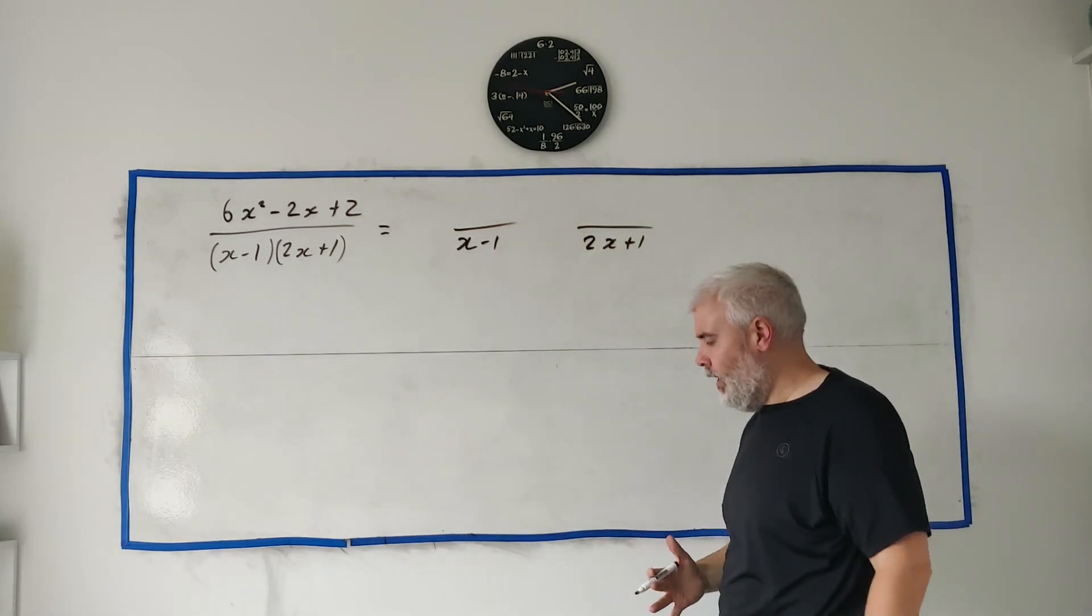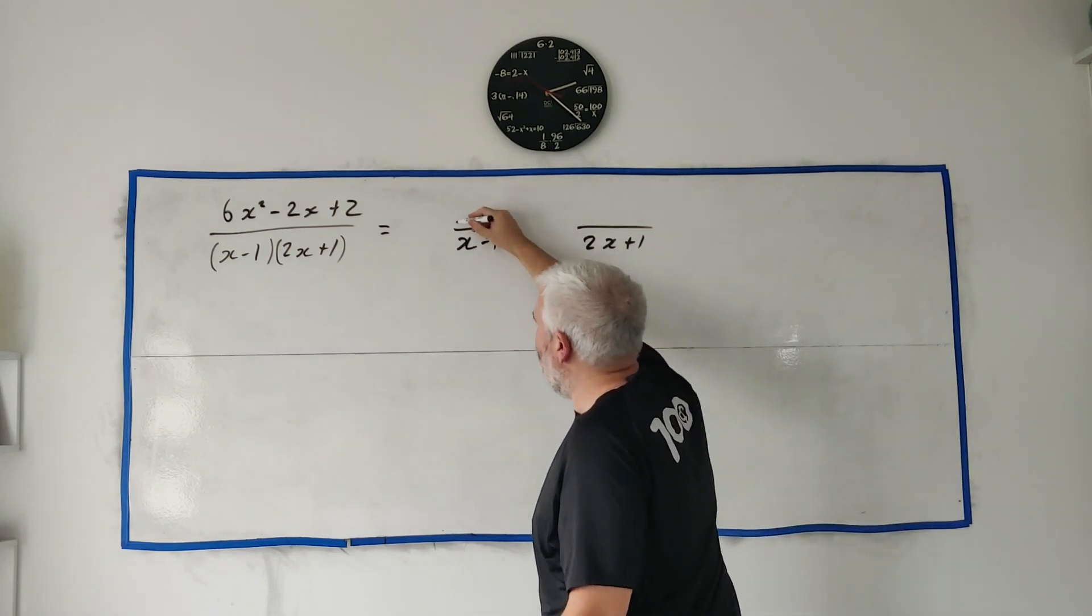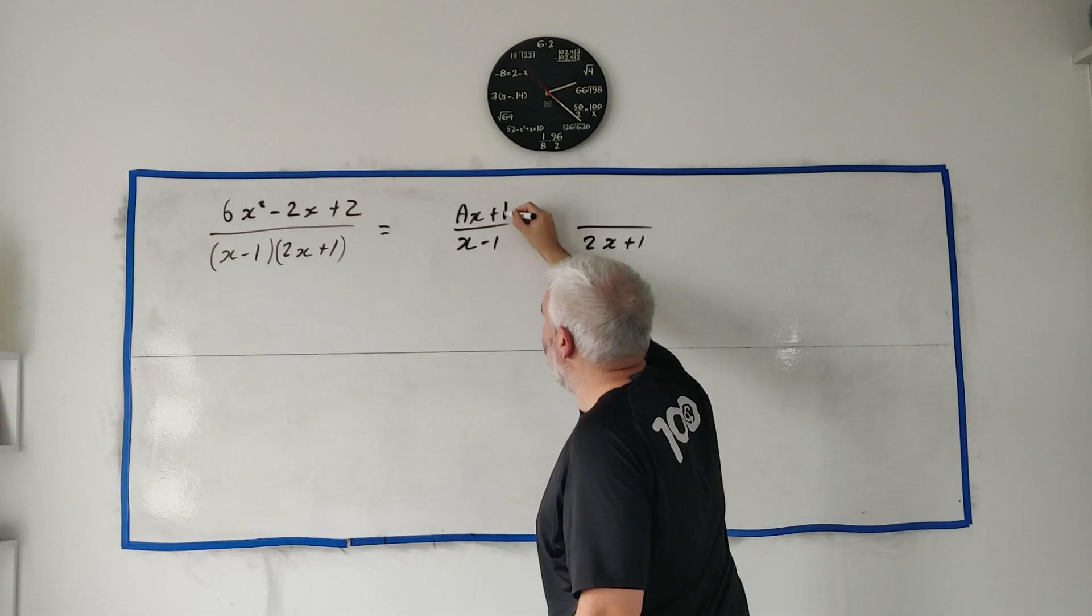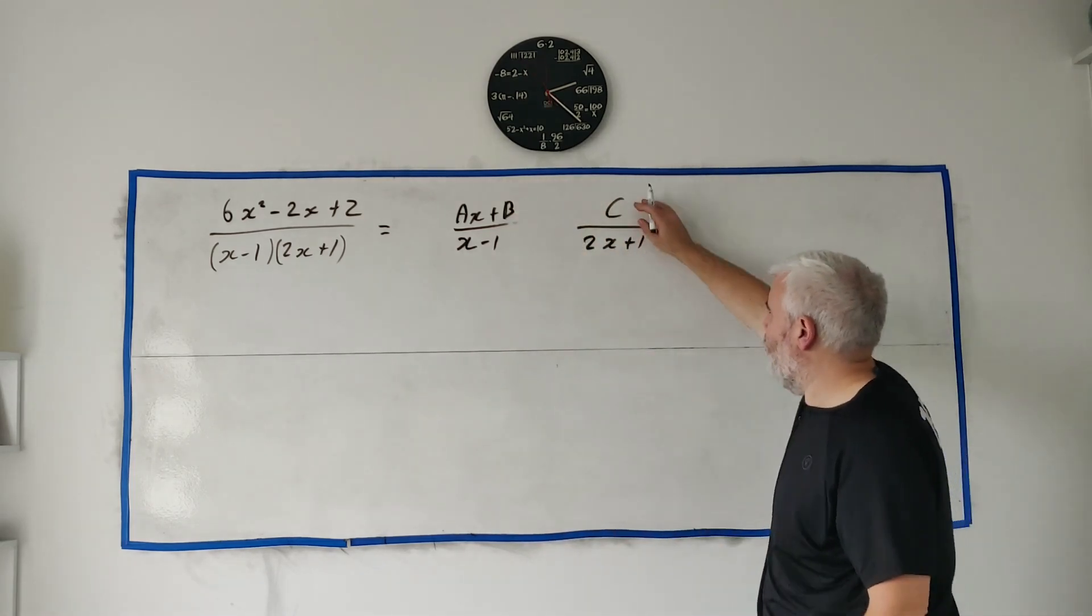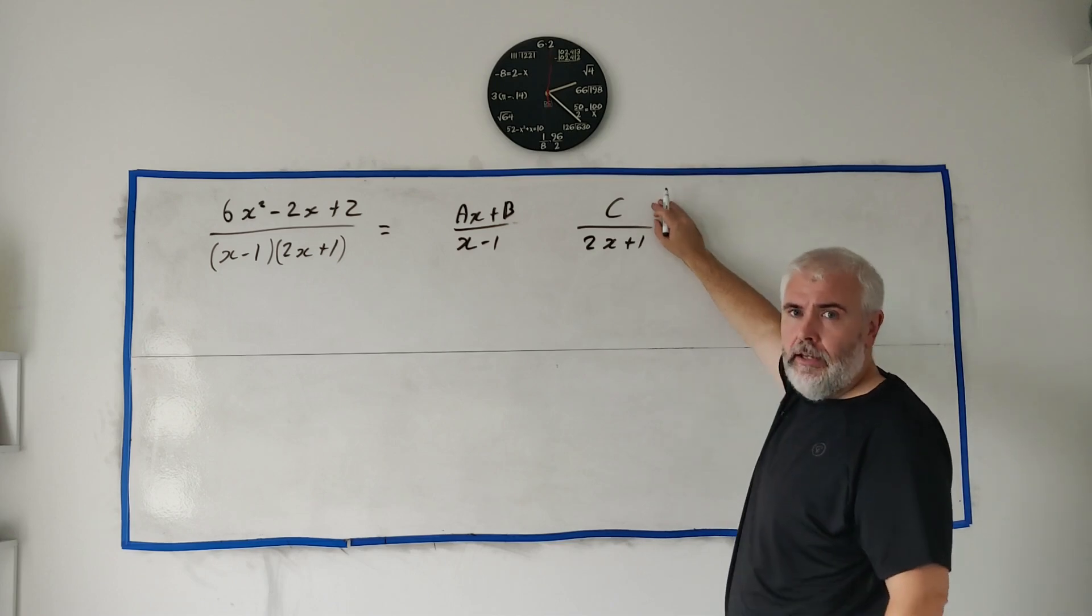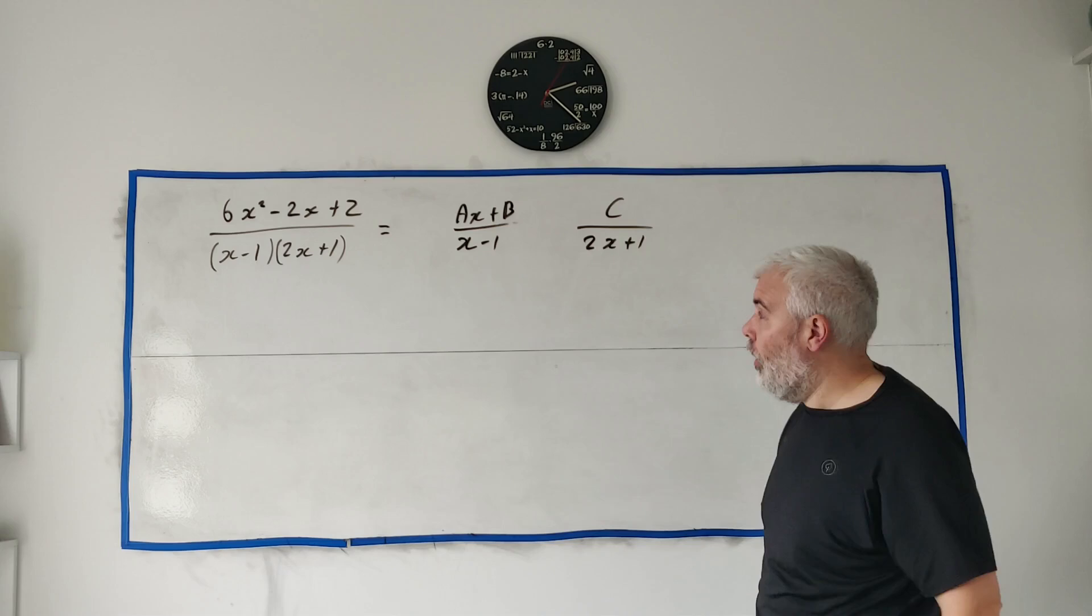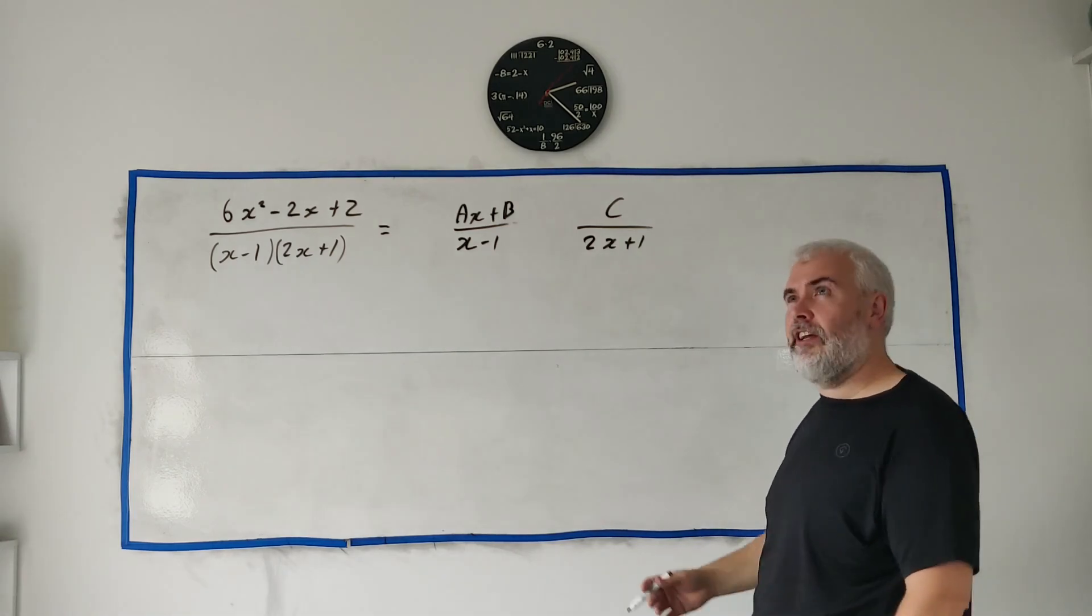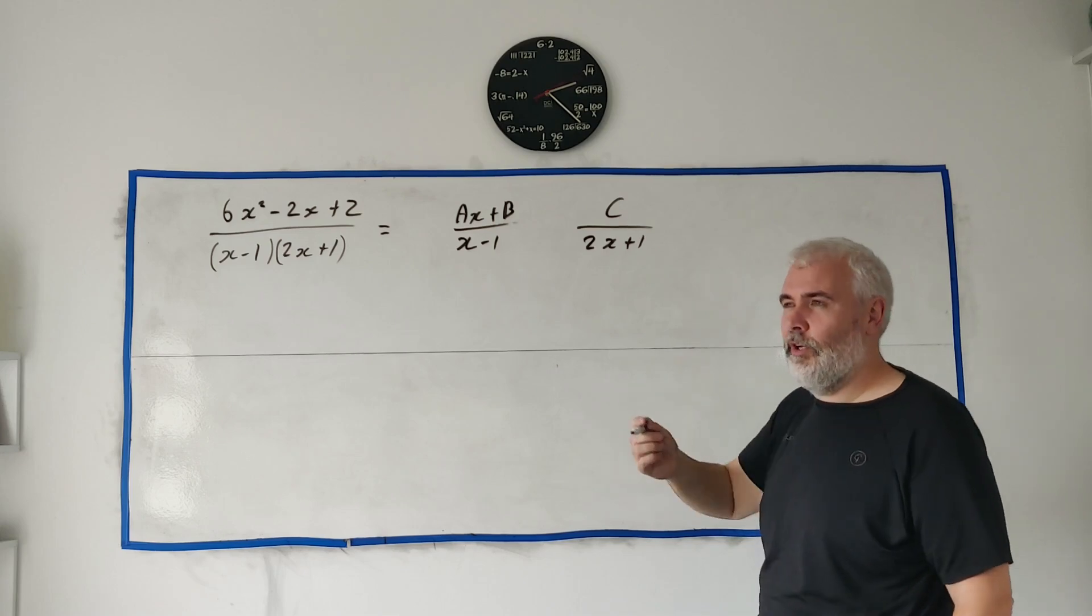If you think of cross multiplying this times this, this times this, where would the x squared appear from? So we have to think about that so that means there must be an x up here somewhere. I'll just go ahead and write ax plus b and a c over here we only need one of the x's. You could put cx plus d but you'd just find one of them was actually equal to zero.